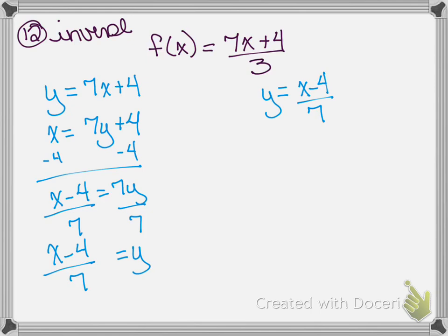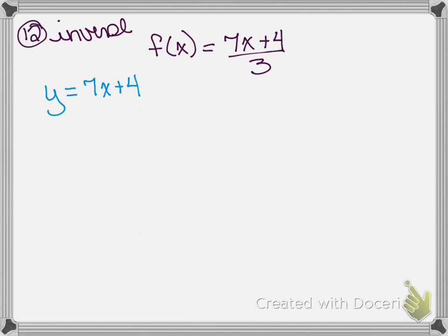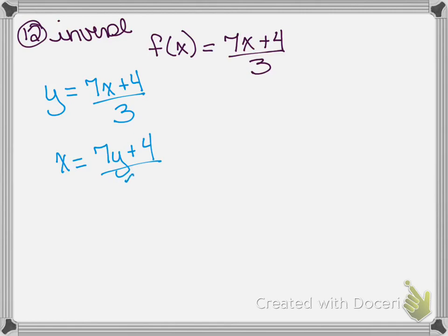I didn't write the problem down correctly — let me fix that. When I took my f of x and changed it to y, I forgot to write the full problem. So I have y equals 7x plus 4 over 3. I need to write 7x plus 4 over 3. My next step is to switch x and y, so I have x equals 7y plus 4 over 3.